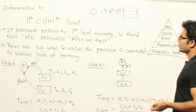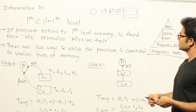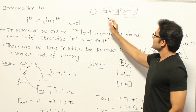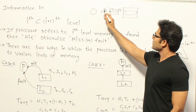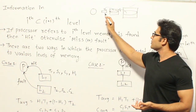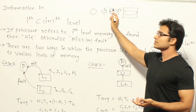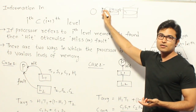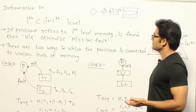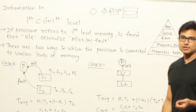Now, that is where we are going to have these access times. Whenever we are searching for some item, let's say one byte, and if that byte is not in the cache, then you are supposed to go to main memory and get it from there. So that is where we are going to use the access times of various levels and find out the overall access time.